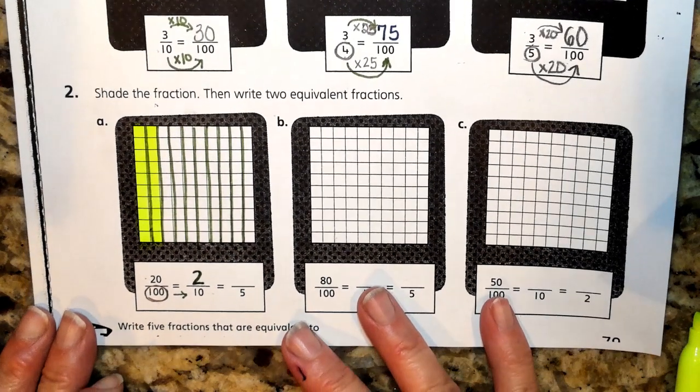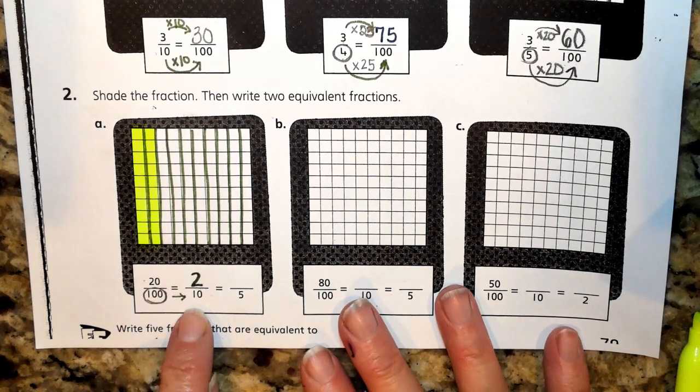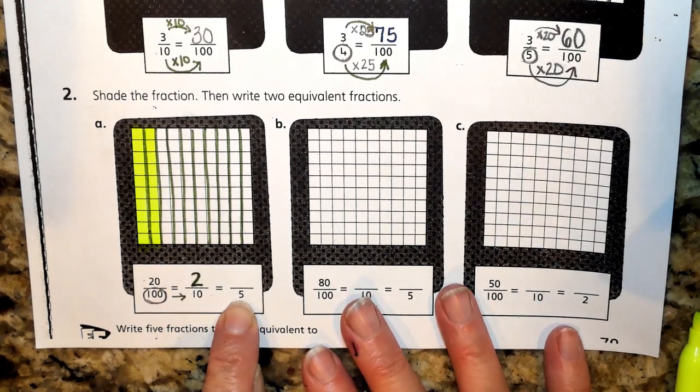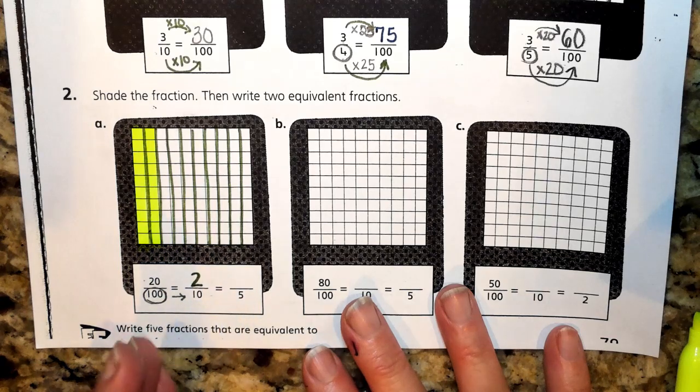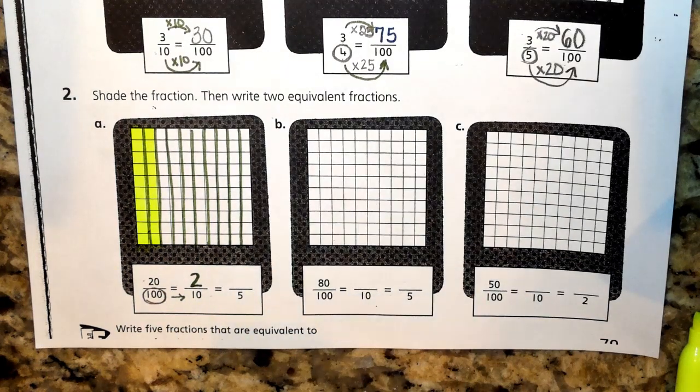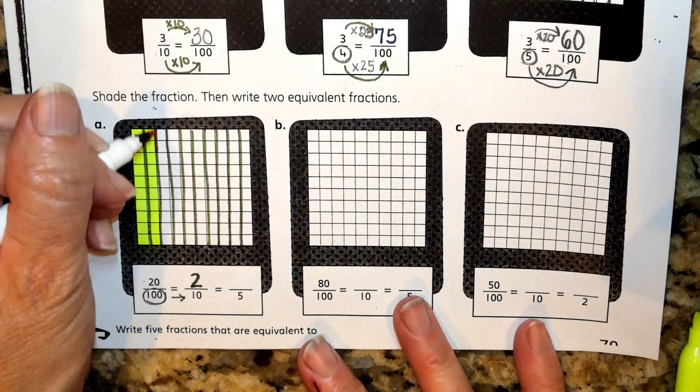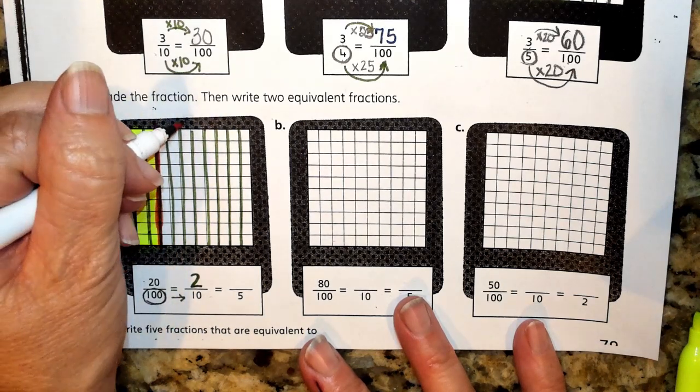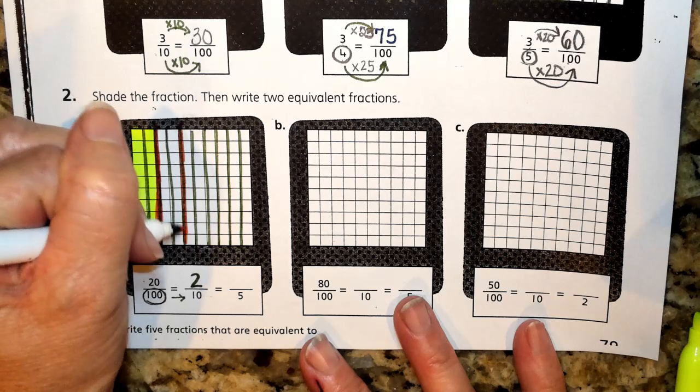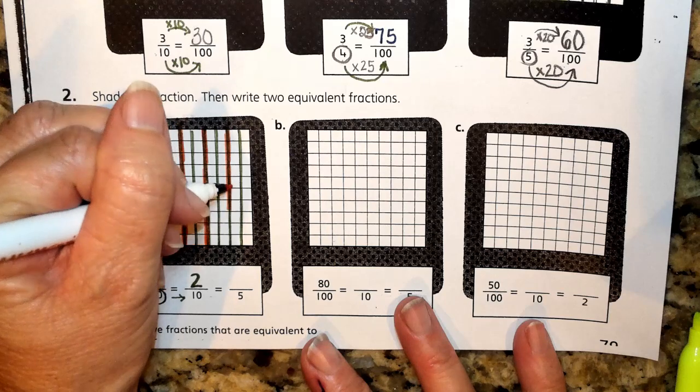Now what we're going to do is rename our 2 tenths as something-fifths. Just like we did before, if I take the number 10 and I take half of that, I'm going to be looking at 5 equal pieces. So I'm going to trade my colors again, and now I'm only going to be getting those 5 equal cuts, which we know is every other marking from our practice above.